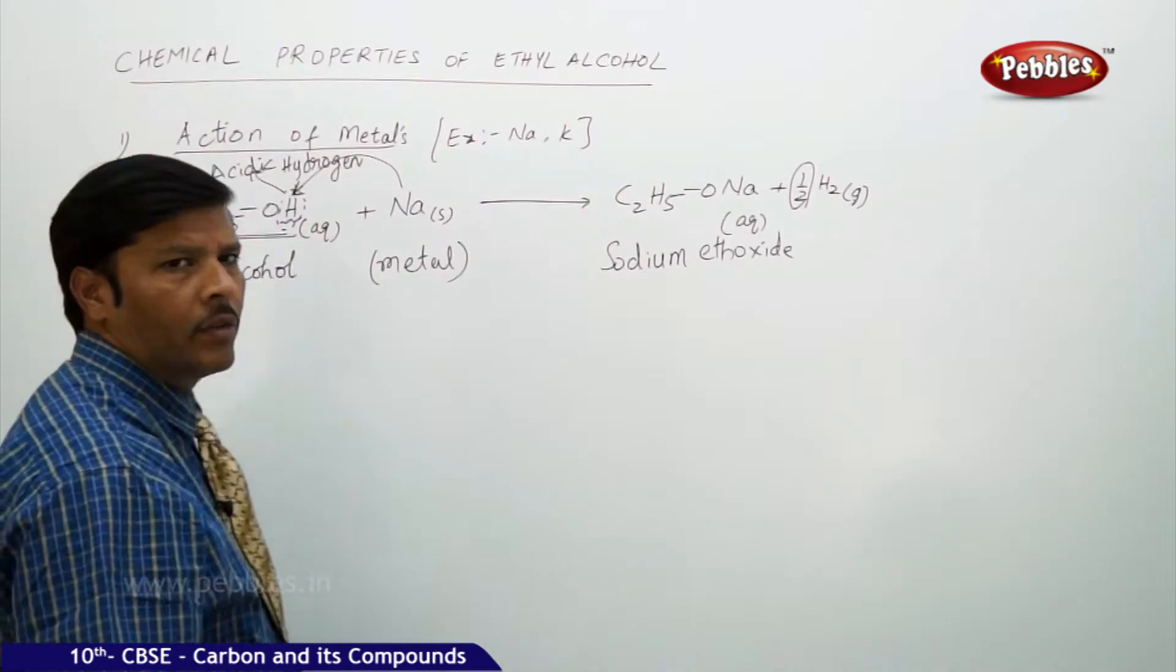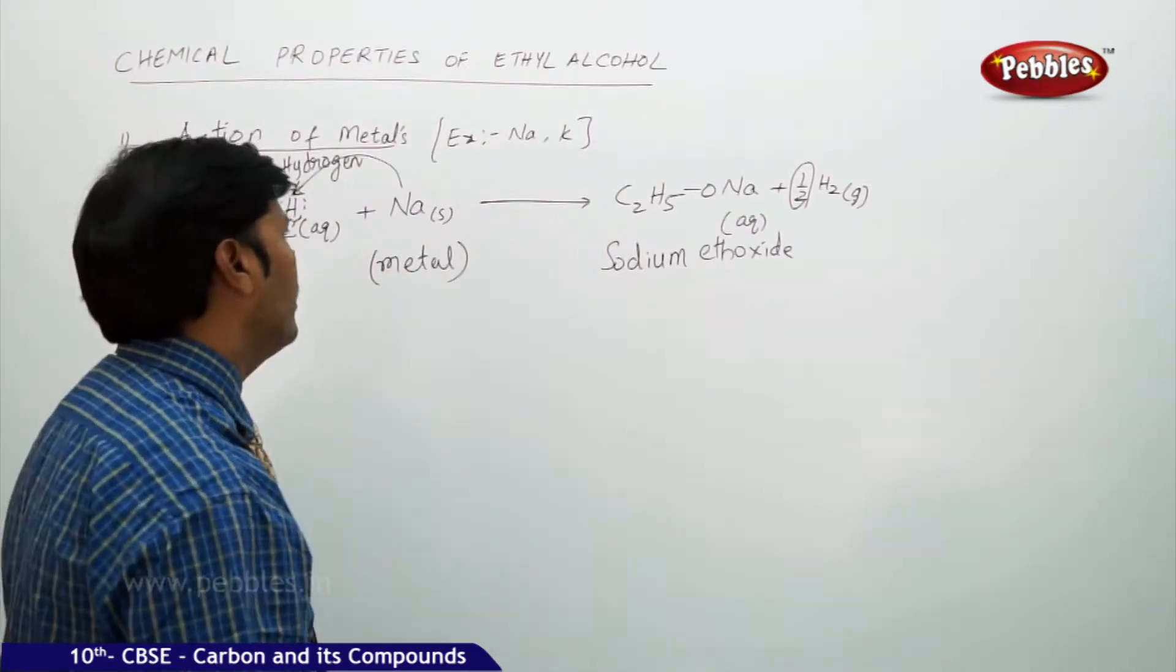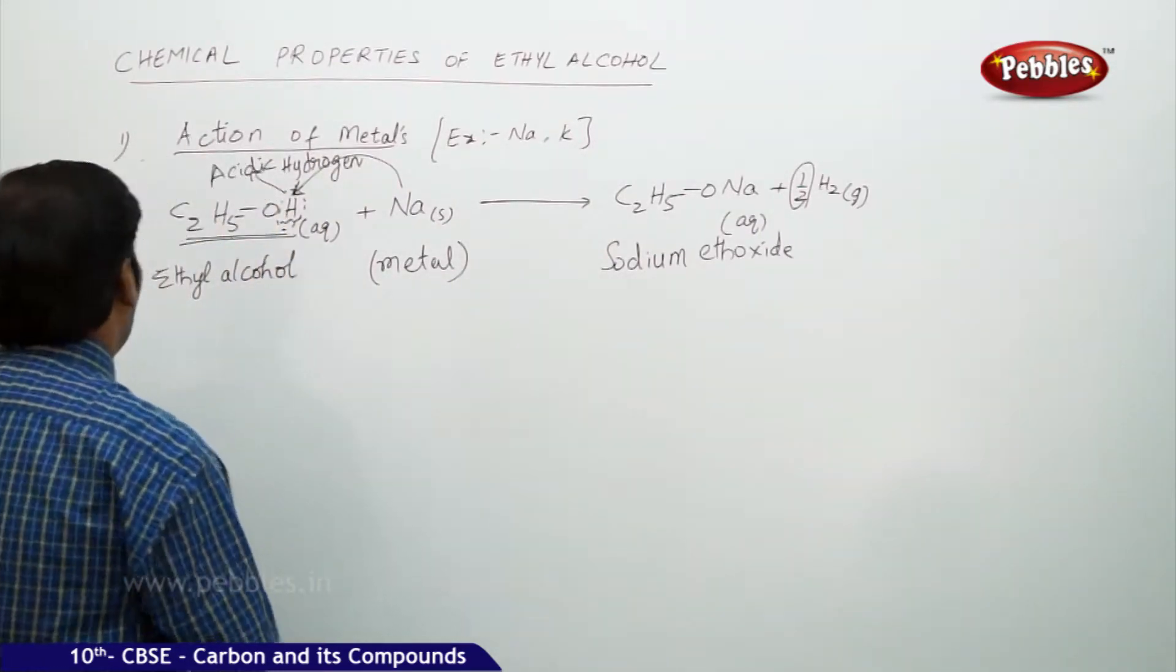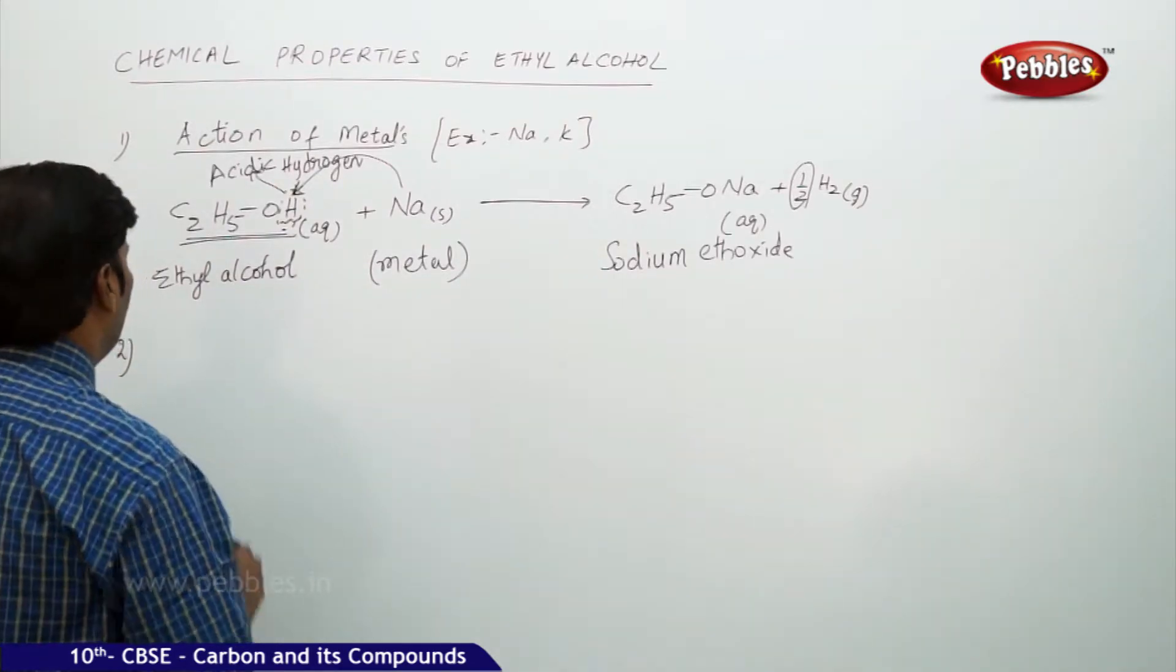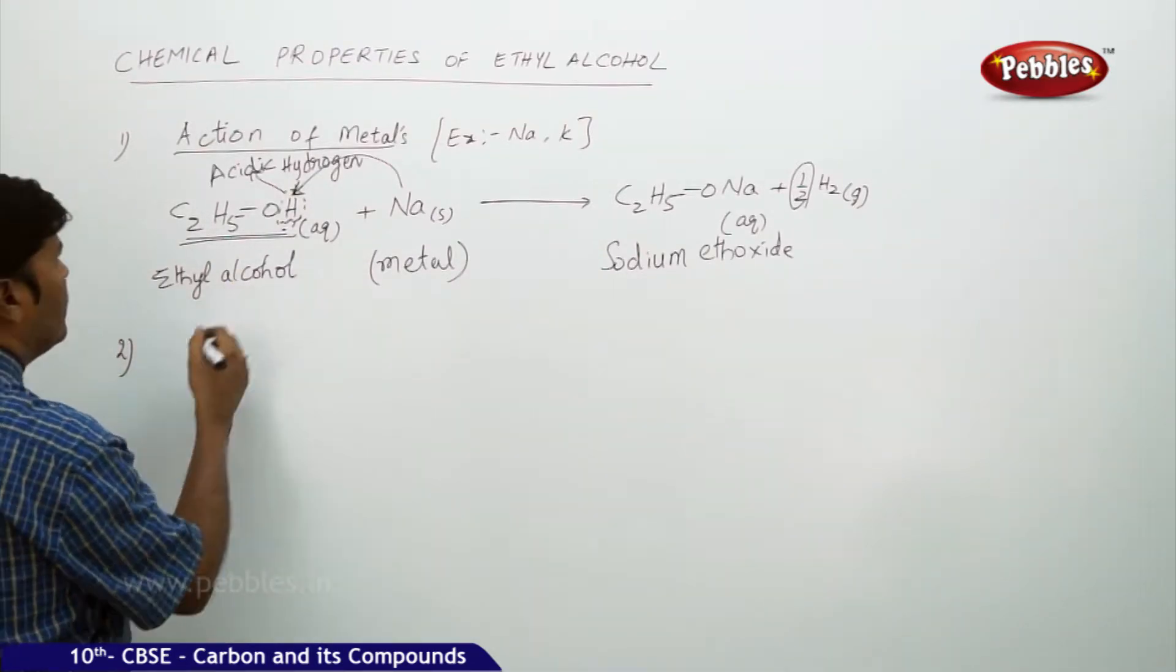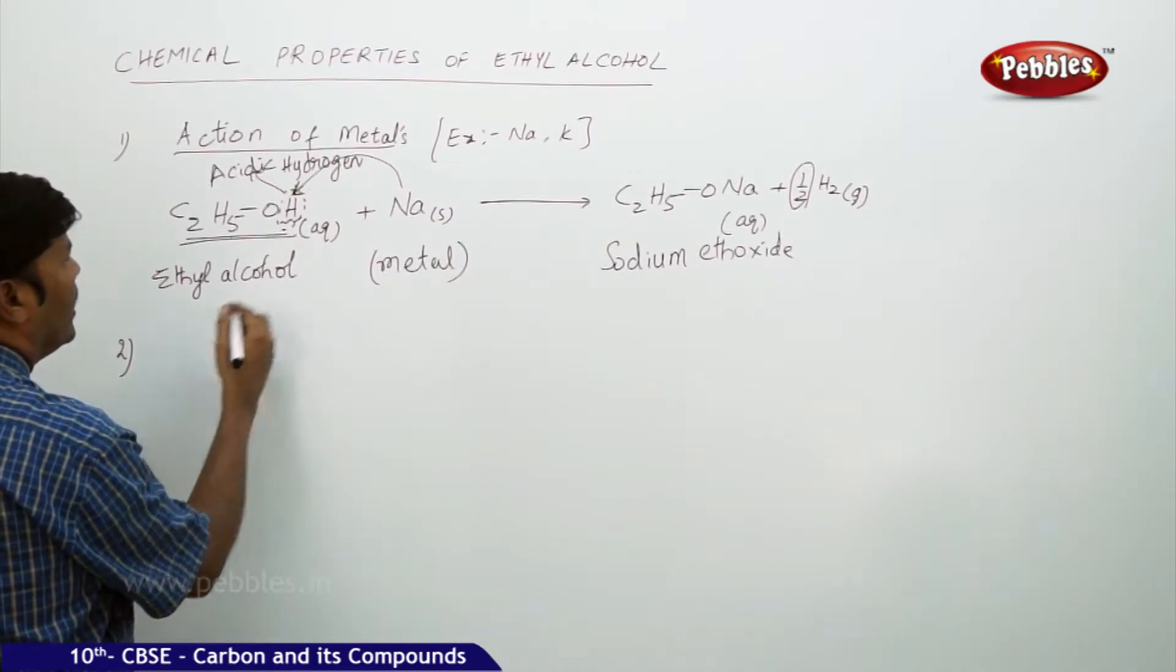We call this acidic hydrogen and we got sodium methoxide, evolution of hydrogen gas. Similarly, if you take ethyl alcohol, it can react completely with the base.